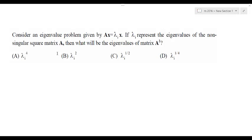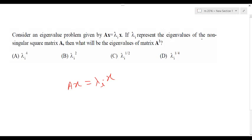Given by Ax = λIx, if λᵢ represents the eigenvalues of the non-singular square matrix A, then what will be the eigenvalues of A²? According to eigenvalue properties, A² will have eigenvalue λ², so B is the right option. It is directly proportional — A³ gives λ³, A⁴ gives λ⁴, and so on.